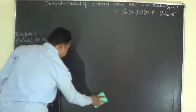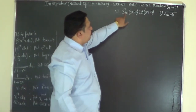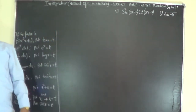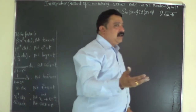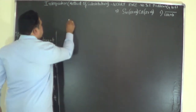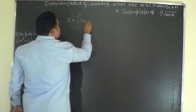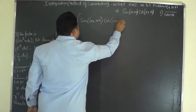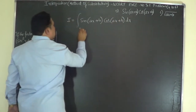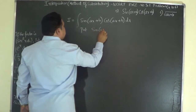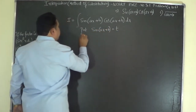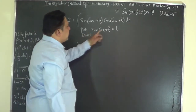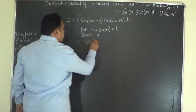Problem number 5 has a sin component sin(ax + b) and a cos component cos(ax + b). You can either put sin(ax + b) as t or cos(ax + b) as t — both substitutions work. So I equals the integral of sin(ax + b) · cos(ax + b) dx. Let us put sin(ax + b) equals t and differentiate with respect to x.